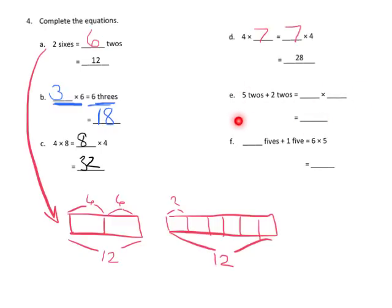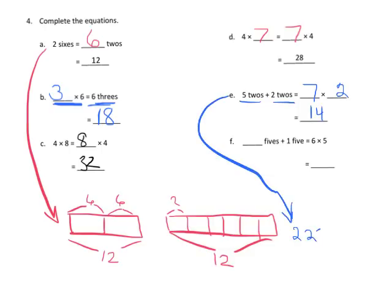This next one is very unique to Common Core, so teachers and parents this may be unfamiliar. We've got five twos and two twos and we're adding those together, so five twos plus two twos equals seven twos, seven times two, and that is equal to fourteen. We can model that: five twos is two plus two plus two plus two plus two, and then two twos is two more, so all together we've got seven twos, which is fourteen.